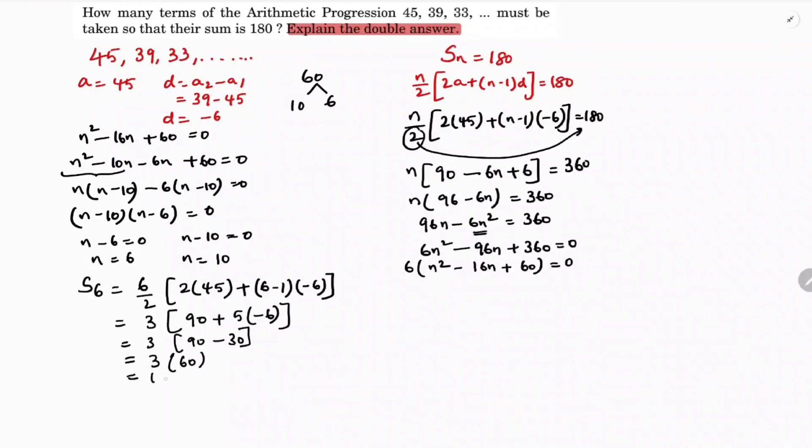In the same way, calculate S10. S10 is 10 by 2 into 2a, a is again 45, plus 10 minus 1 into minus 6. So 10 by 2 is 5. 10 by 2 value is 5, 2 into 45 is 90 plus 9 into minus 6.